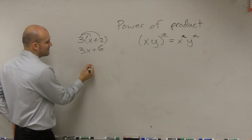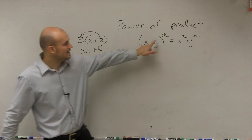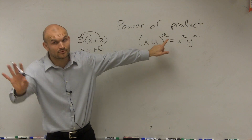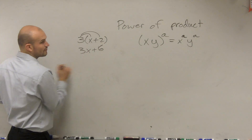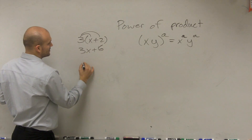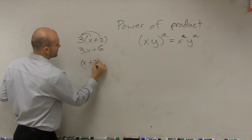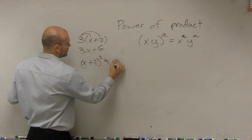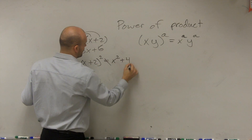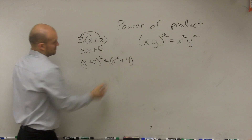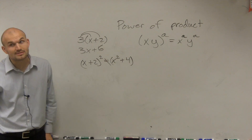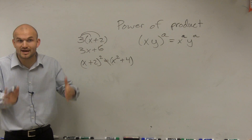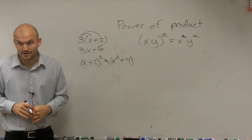Well, when we have a product raised to an exponent, now be careful — this does not work for when you have (x + 2) squared. That does not equal x squared plus 4. Because what is (x + 2) squared? That's (x + 2) times (x + 2).